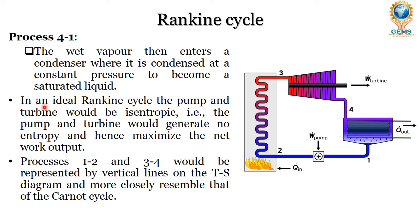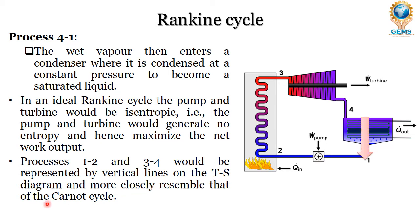In an ideal Rankine cycle, the pump and turbine would be isentropic — that is, the pump and turbine would generate no entropy and hence maximize the net work output. Processes 1 to 2 and 3 to 4 would be represented by vertical lines on the T-S diagram, more closely resembling the Carnot cycle. These processes 1 to 2 and 3 to 4 are isentropic, meaning entropy remains completely constant.